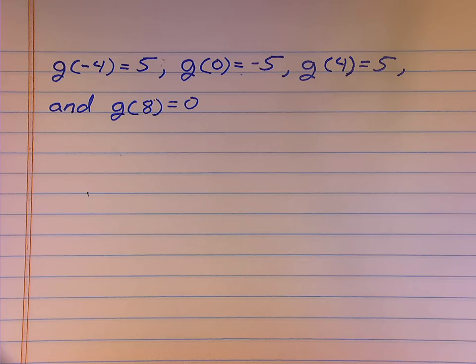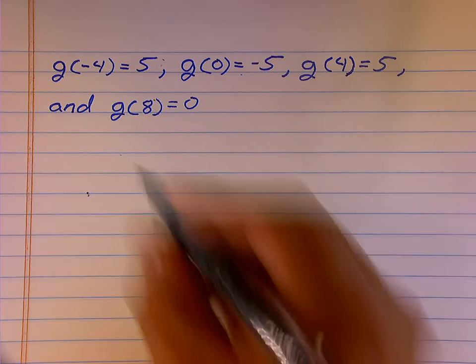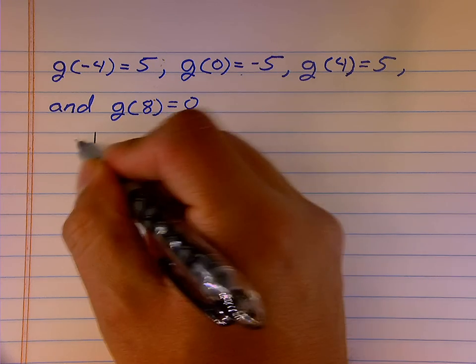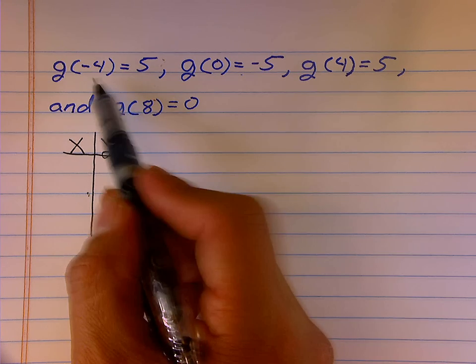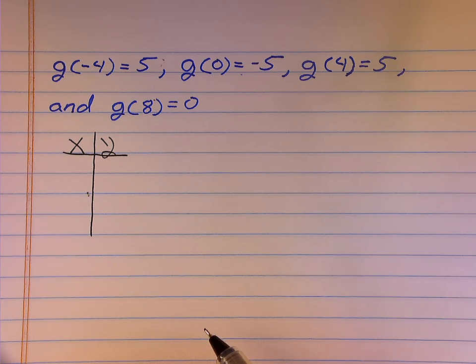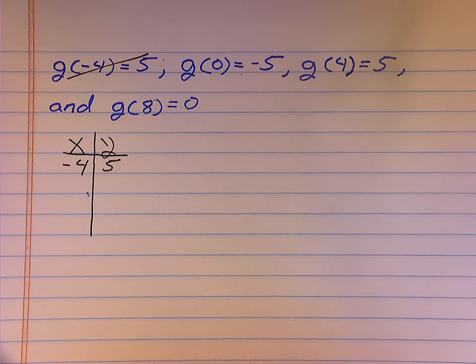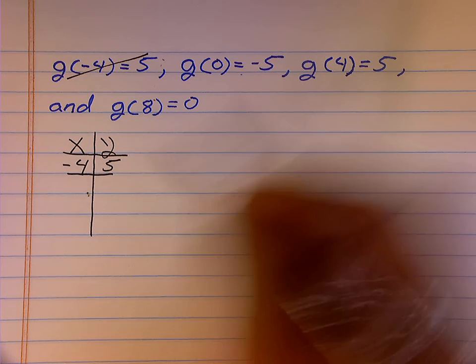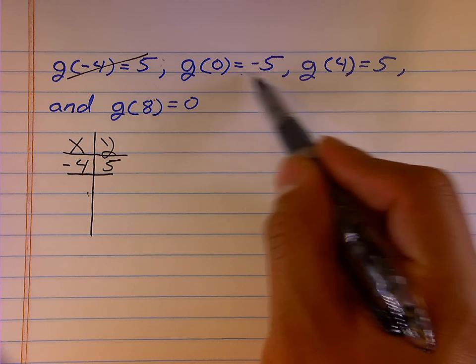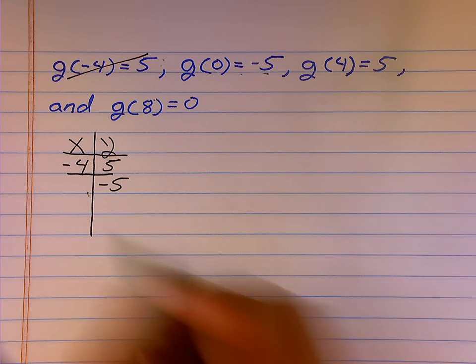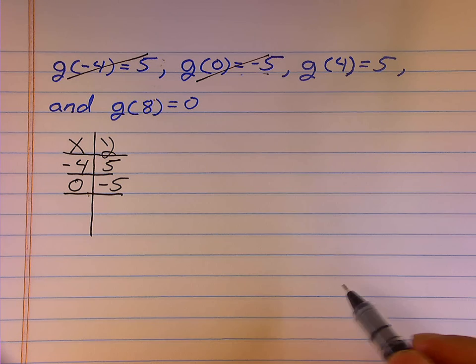For our last example, we're going to be given our information in function notation. So we're going to find our domain. You may want to first write this set of information either in set form or in a table form. I'm going to choose to write this as a table. And I'm going to look at each point as I go along and interpret what is written there. For the very first one, g of negative 4 is 5. I interpret that as my y value is 5 when the x value is negative 4. So I am done with that point. The next piece of information says my y value is negative 5 when the x value is 0.